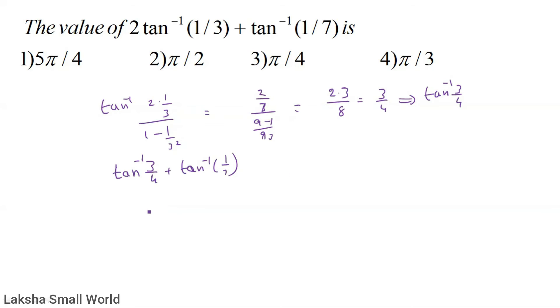Applying the addition formula: numerator is 3/4 + 1/7, denominator is 1 − (3/4)×(1/7). Numerator: 4 − 3 = ... cross multiply gives 21 + 4 = 25 over 28. Denominator: 4 + 3 = 7, giving 28 − 3 = 25 over 28.